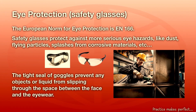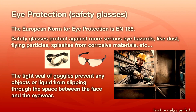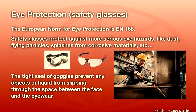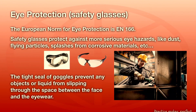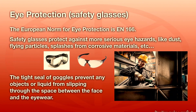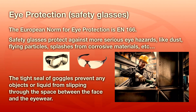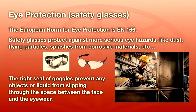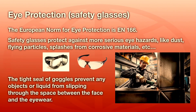Eye protection: the European norm for eye protection is EN166. Eye protections are used to protect the eyes from serious hazards such as dust, flying particles, and splashes from corrosive materials.